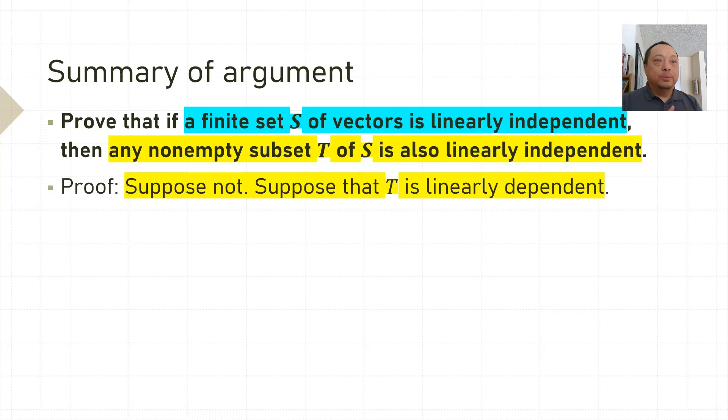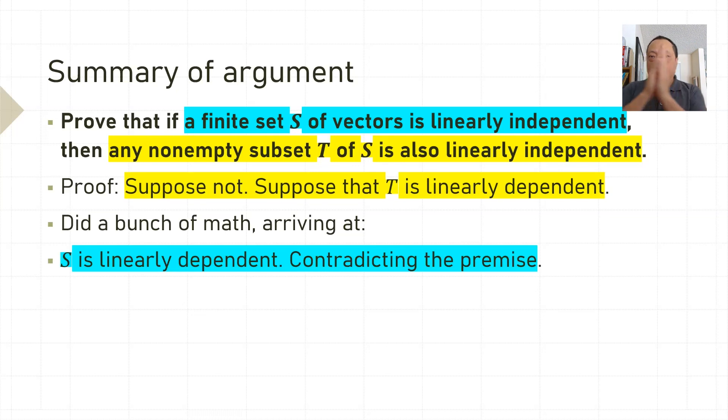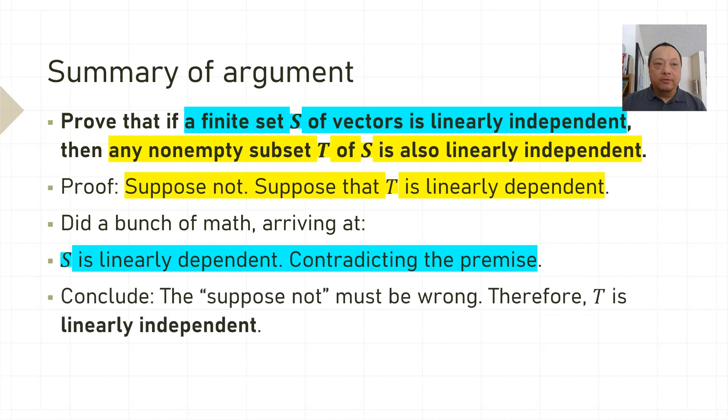We started our proof by saying suppose not. Suppose T is linearly dependent. We did a bunch of math. We arrived at S is linearly dependent, contradicting the premise. Therefore, we conclude that the suppose not part must be wrong. T is linearly independent. QED.